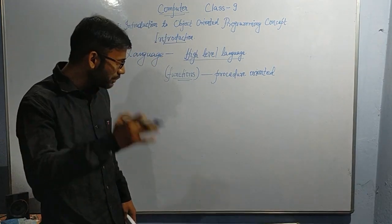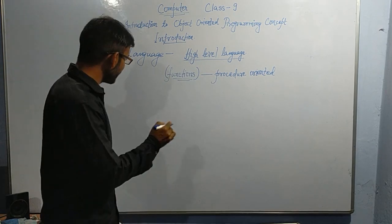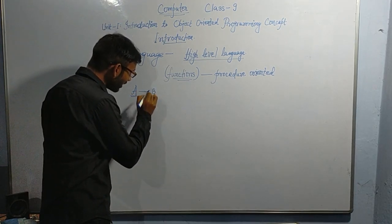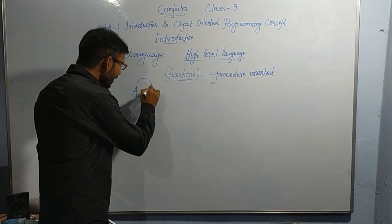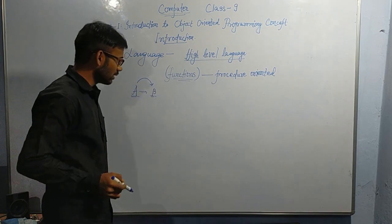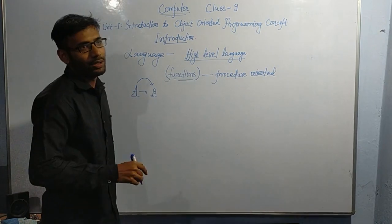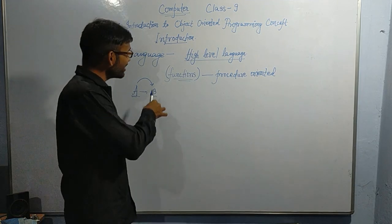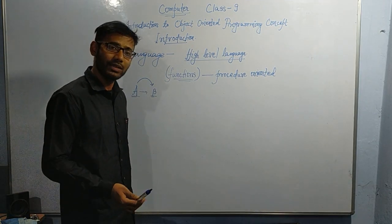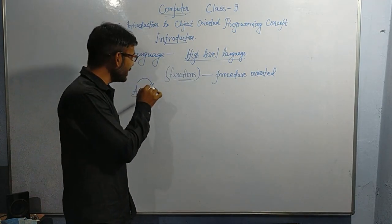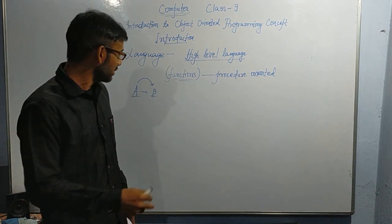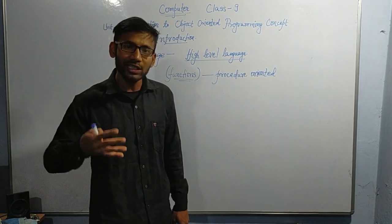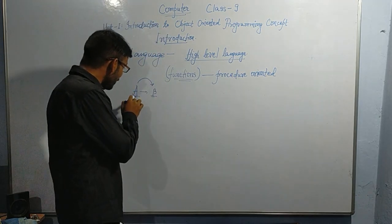Let me give a simple example. Suppose there is a person named A who tries to command person B and access B's resources — for example, to bring a cricket bat from Jamshedpur. In procedure oriented programming, person A will command B with complete procedures — all the procedures B needs to follow, all the commands and functions are directly given by person A.